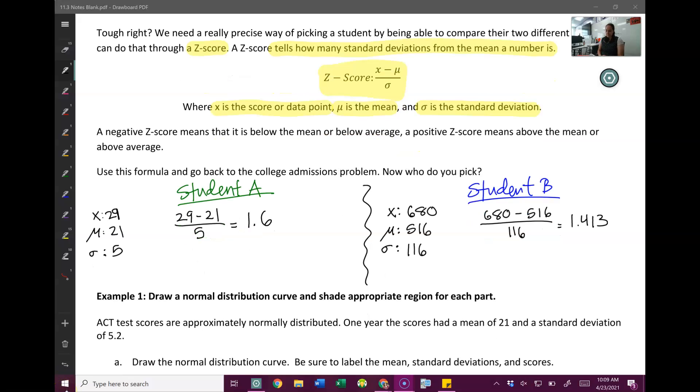This is what you should have gotten. 1.413. So student A has a score of 1.6 standard deviations above the mean. Student B score is only 1.413 standard deviations above the mean. So it's pretty obvious that student A did much better than student B. Well, I shouldn't say much better. They did better than student B. They have the higher score because it's farther from the mean. It's higher up. So now we can confidently say as college admissions expert, let's accept student A into our program. They scored better than student B.